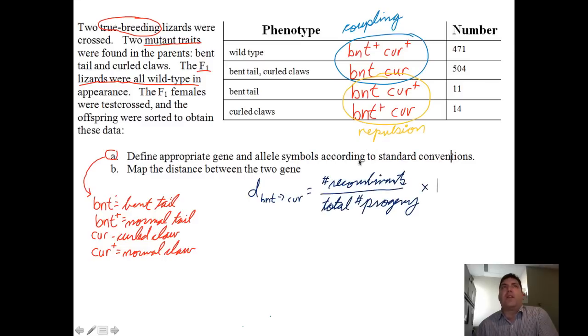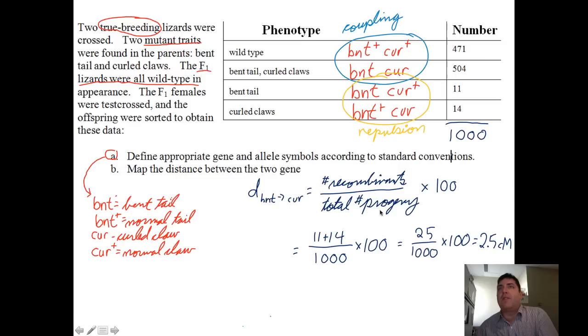To further carry out this question, to define the map distance, so we're working on the next part of this question, we're going to look at the number of recombinants over the total number of progeny and multiply that by 100. It's a simple ratio. So if I ask you to show your work, definitely write down the formula. If you add up all these progeny, we have 1,000 of them. It turns out that we have 11 plus 14 recombinants out of 1,000 total. That's 25 out of 1,000. And that gives us a map distance of 2.5 centimorgans or 2.5 map units, which basically means there's a 2.5% chance of recombination occurring in that region.